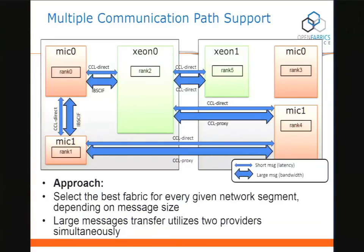How we're using that on Phi is that these different providers have different performance characteristics for large versus small messages. The paths with small arrows represent the fastest small message path between two points. CCL Direct — the Co-Processor Communication Link Direct — is the fastest way to link a Xeon and a Phi for small messages, but IB SCIF gives the highest bandwidth because it takes advantage of the DMA engine driving PCI Express directly. Our MPI now uses both simultaneously, doing cut-overs like a traditional Eager/Rendezvous protocol switch, optimizing bandwidth and latency for all endpoint pairs.